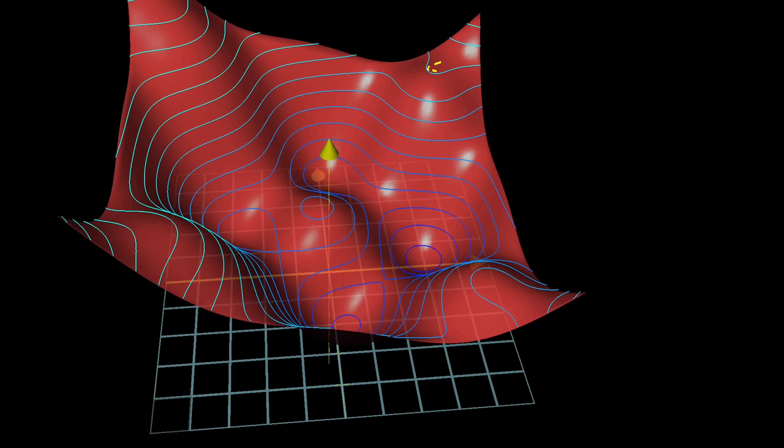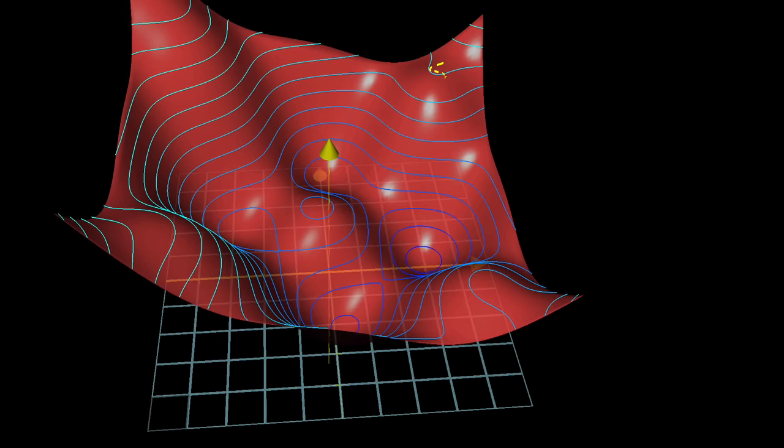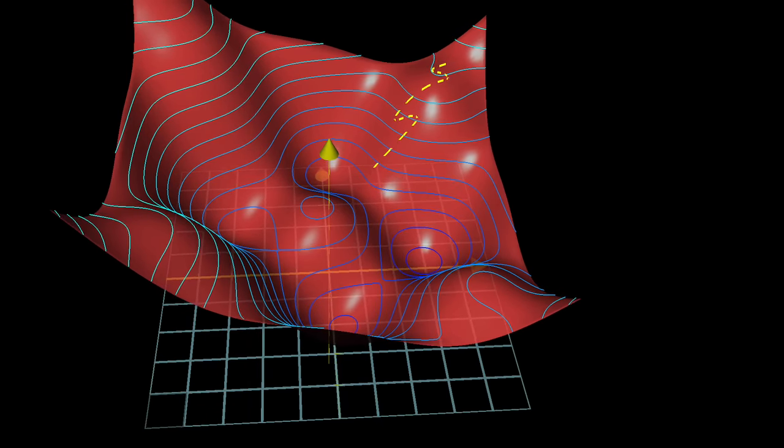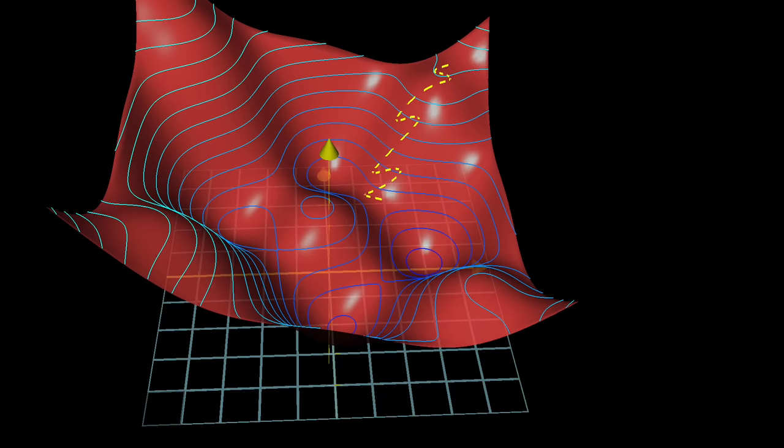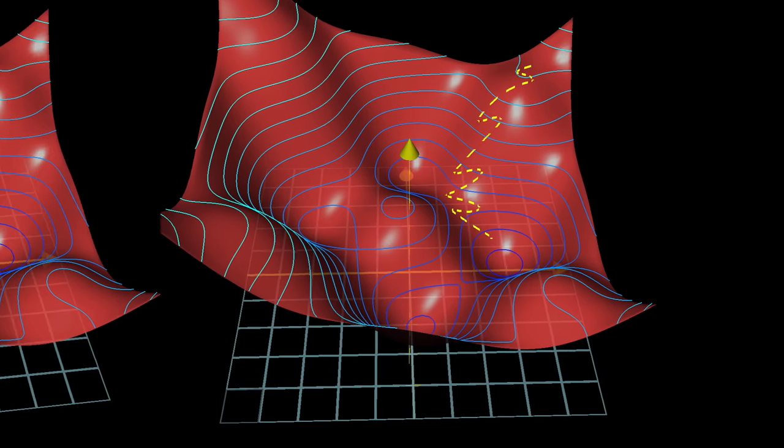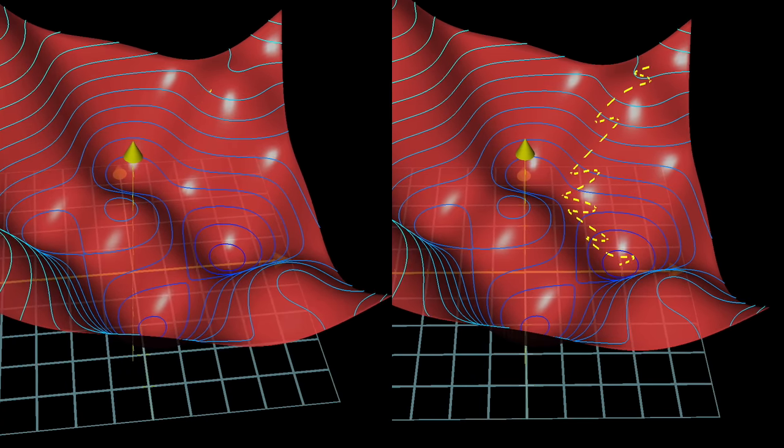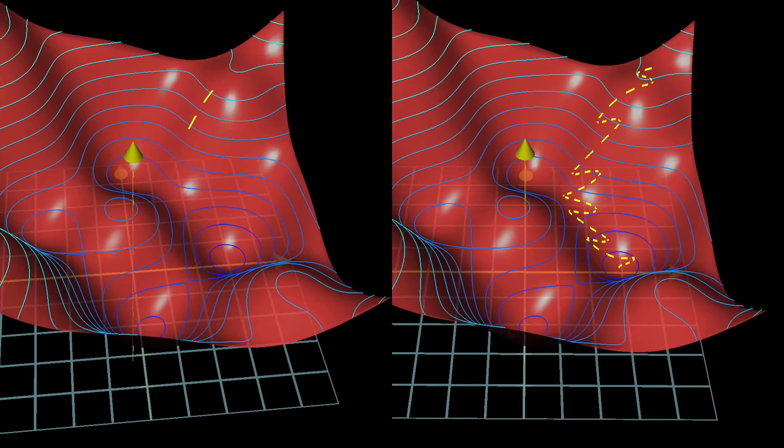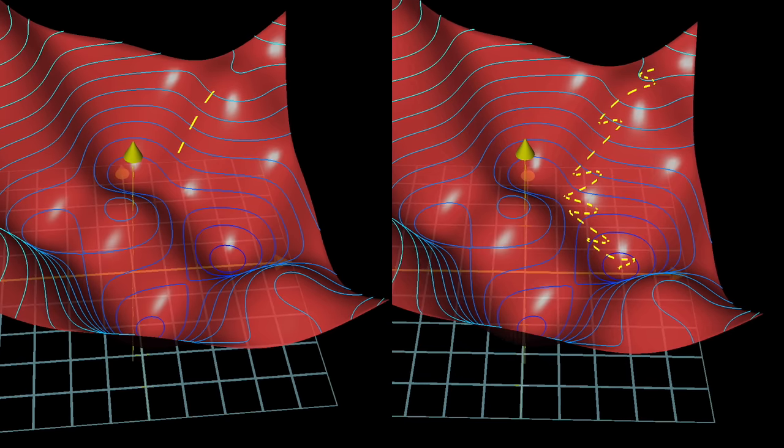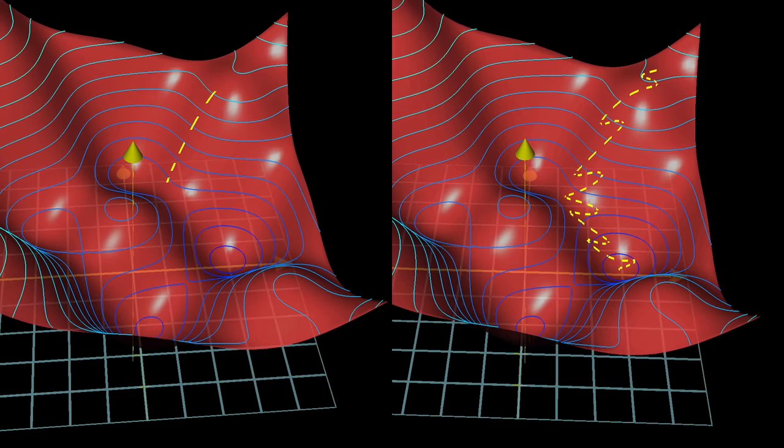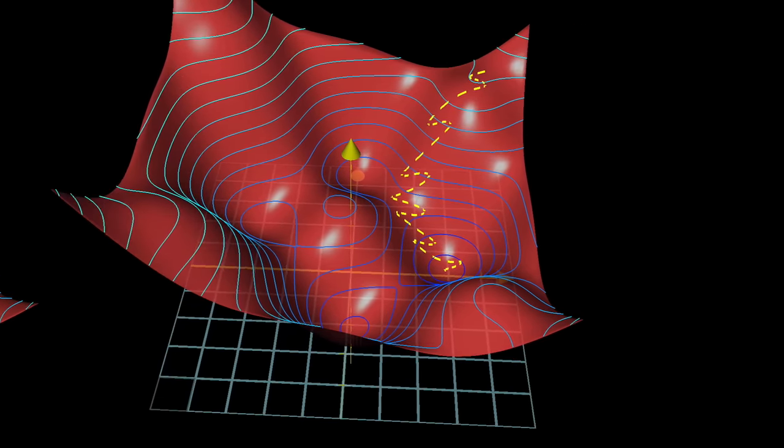If you were to plot the trajectory of your network under the relevant cost surface, it would be a little more like a drunk man stumbling aimlessly down a hill, but taking quick steps, rather than a carefully calculating man determining the exact downhill direction of each step before taking a very slow and careful step in that direction. This technique is referred to as stochastic gradient descent.